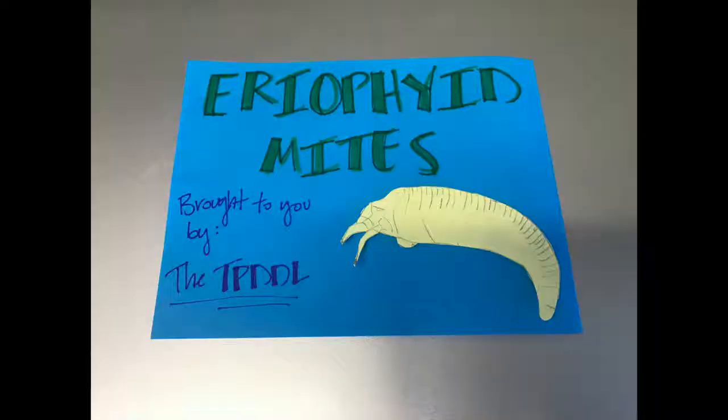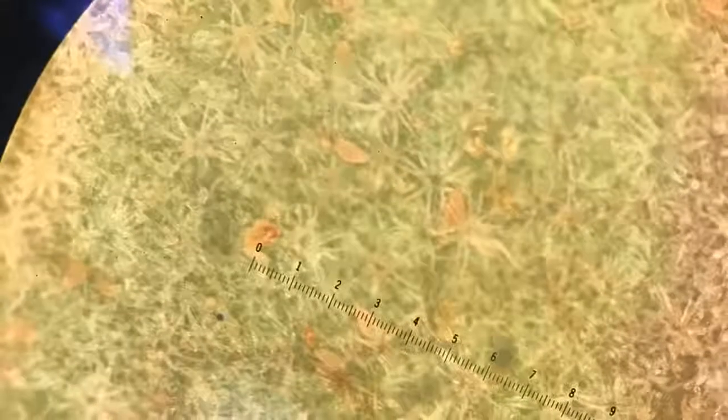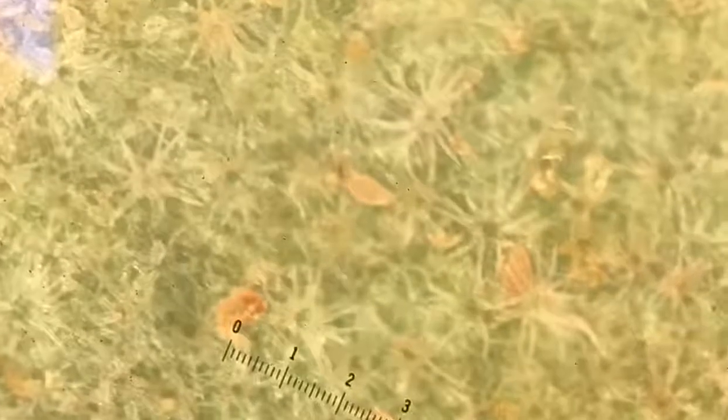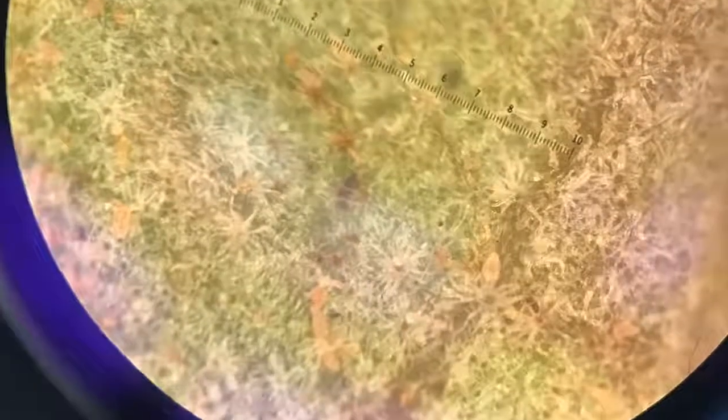Eriophyid mites are microscopic mites that often go undetected. They are slow moving, usually white or yellow in color, and have a distinctive carrot or cigar shape. They're pretty small, but you can see them here on the leaf.